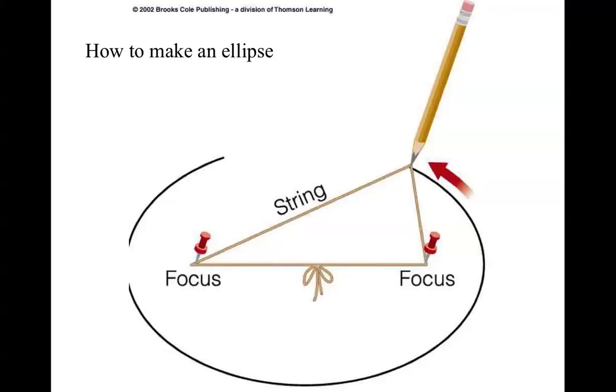As you pull it around, you'll trace the ellipse. If you put the foci farther apart compared to the length of the string, the ellipse becomes more eccentric or skinny. If you move the two foci together to the same place, you get a circle.